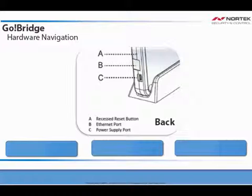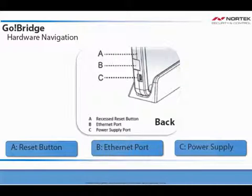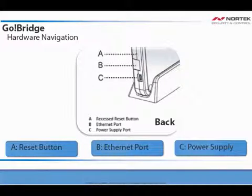On the back of the communicator, you will see: A, a reset button; B, the Ethernet port; and C, the power supply port.